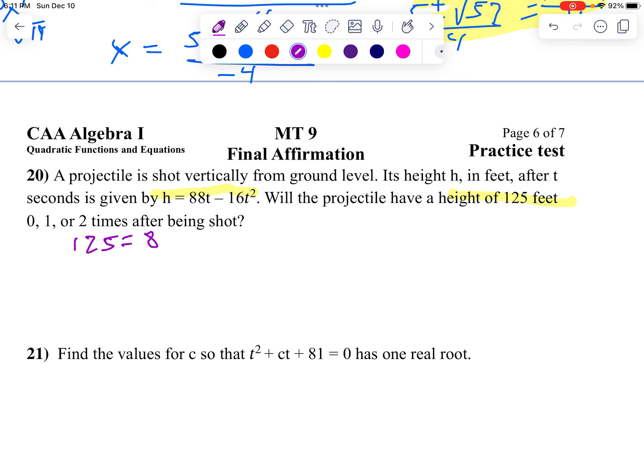It equals 88t minus 16t squared. Notice it's not written in standard form. I'm going to subtract 125 from both sides and rewrite it in standard form. So we're going to get 0 equals negative 16t squared plus 88t minus 125.